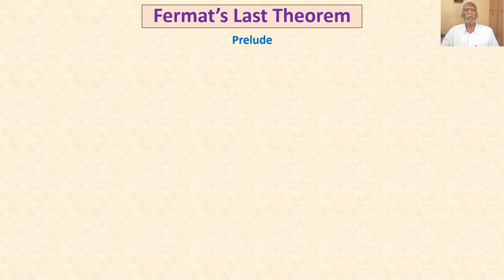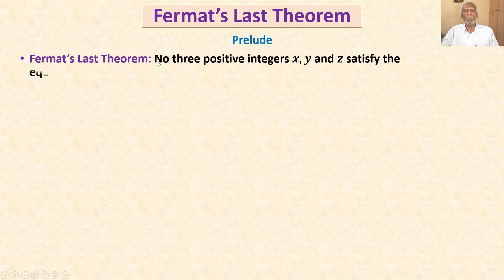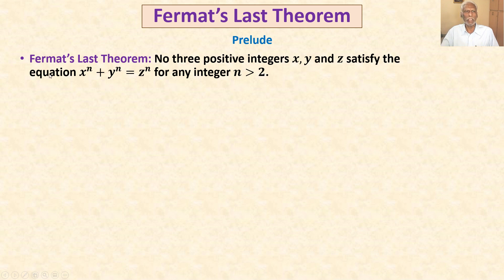We talk about the prelude of Fermat's last theorem. What is Fermat's last theorem? It is known as: no three positive integers x, y, and z satisfy the equation x^n + y^n = z^n for any integer n greater than 2.